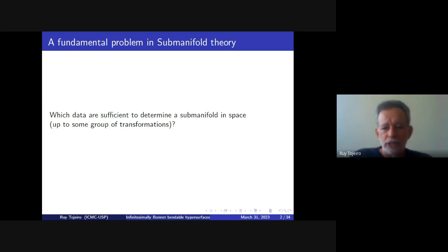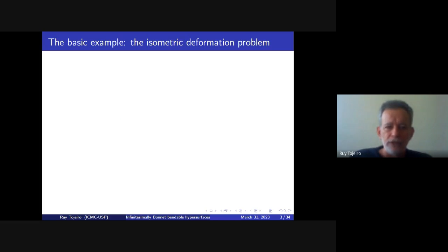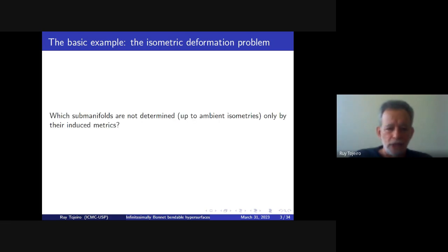The subject of the talk fits into a fundamental problem in submanifold theory: to investigate which data are sufficient to determine a submanifold in a space up to some group of transformations. A basic example is the isometric deformation problem, which asks which submanifolds are not determined — up to ambient isometries — only by their induced metric. In other words, it's the problem of uniqueness of isometric immersions into some space form.